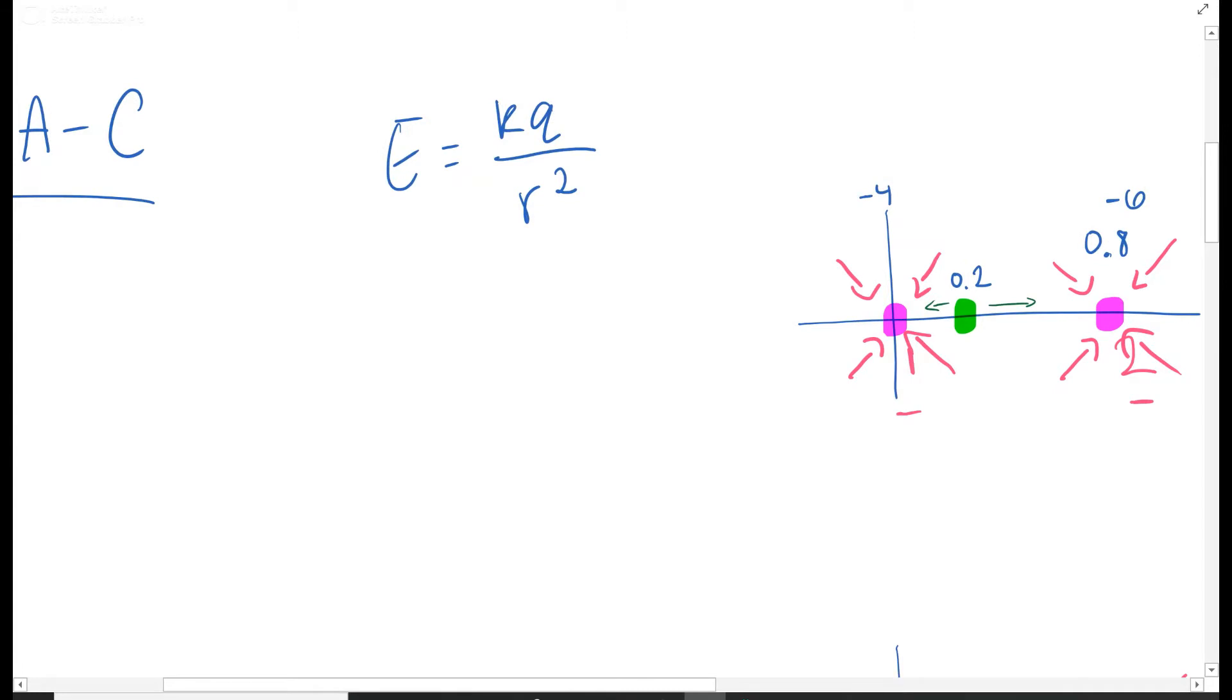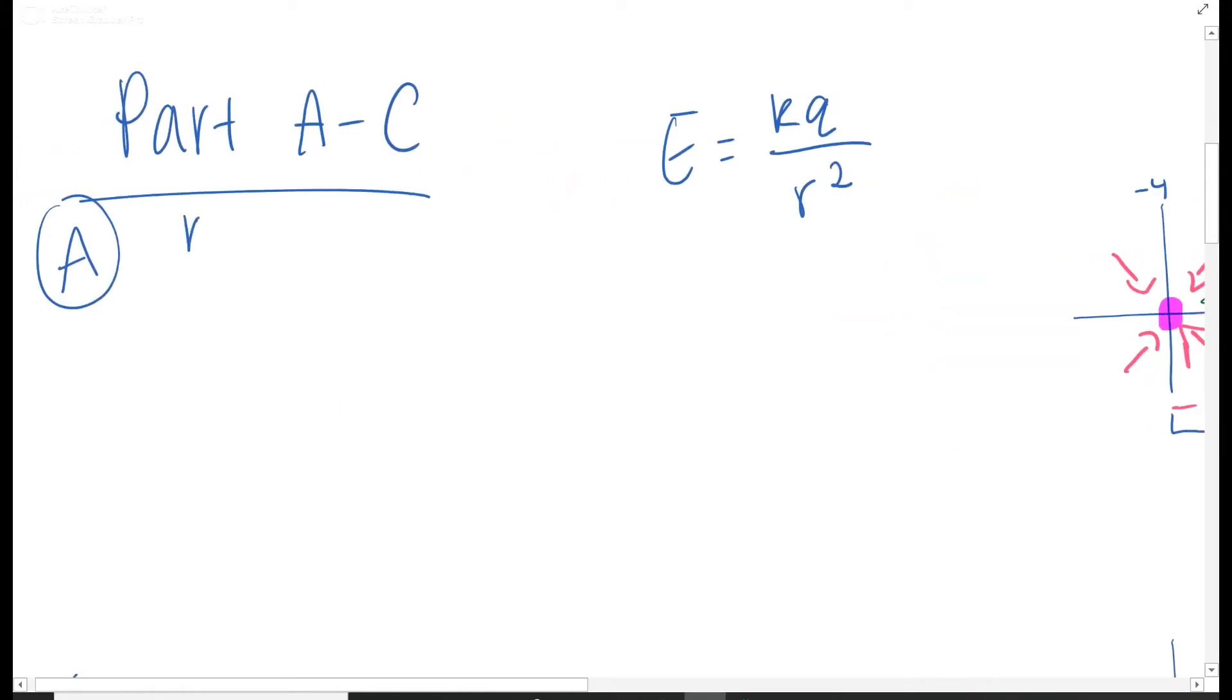So we're going to have to do this twice. We're going to do one force between these two points, and then one force between these two points. So we know our K constant is 9 times 10 to the ninth.